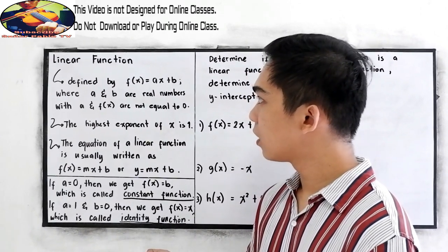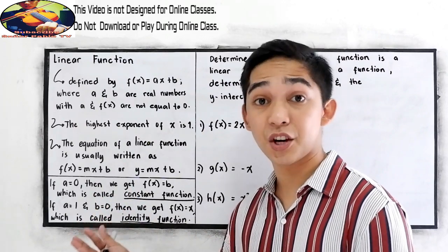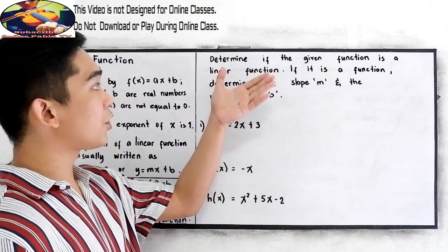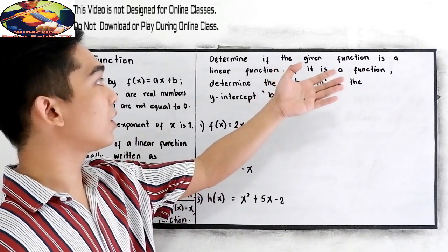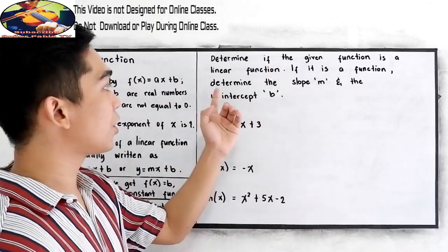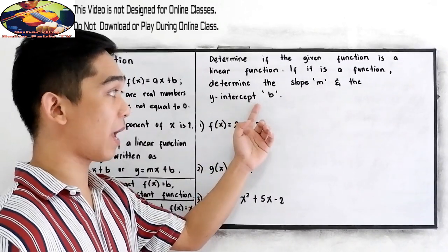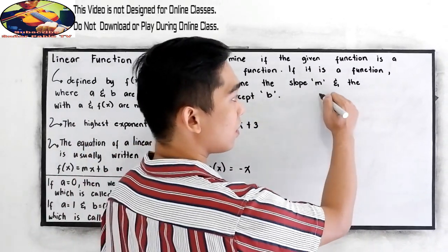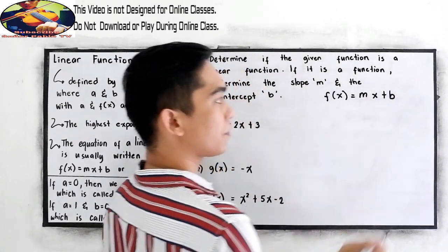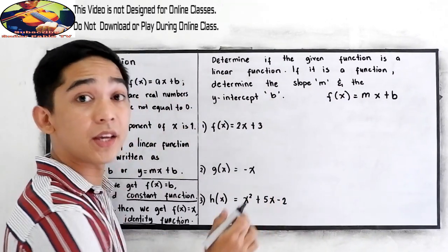Those are the terms and definitions you need to learn about the linear function. For our application, determine if the given function is a linear function. If it is a linear function, determine the slope, our m, and the y-intercept, our b. In f of x is equal to mx plus b, m is our slope and b is our y-intercept.